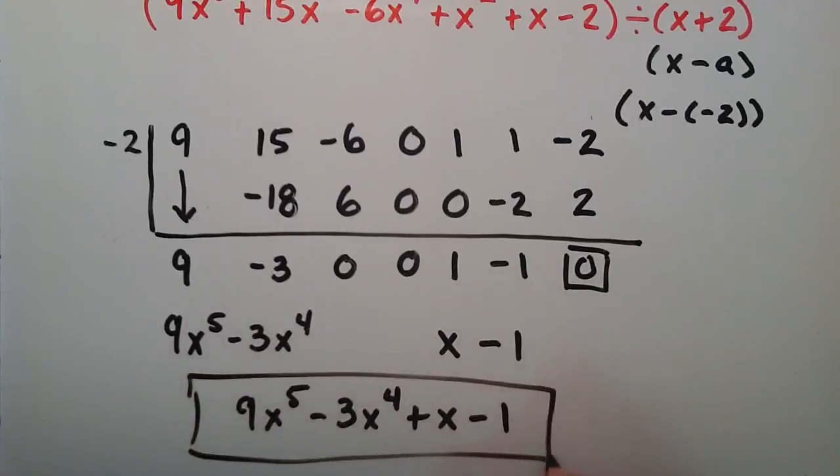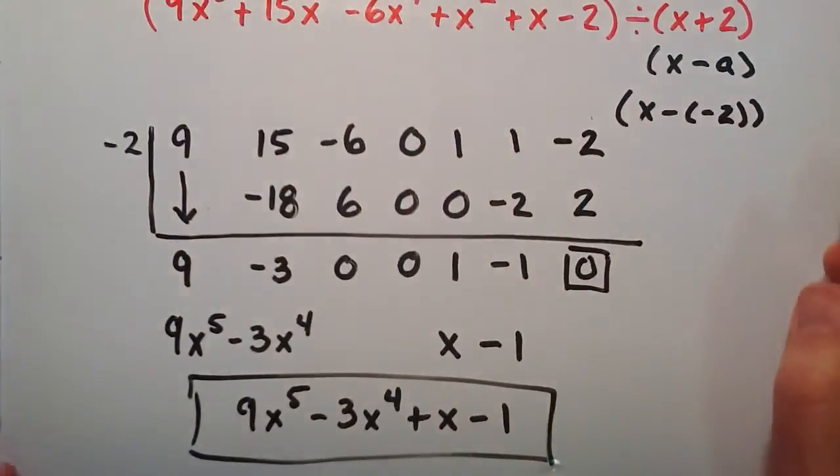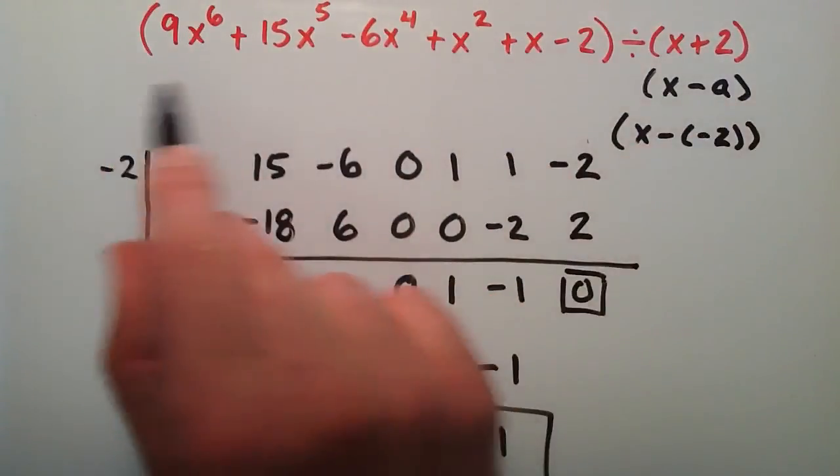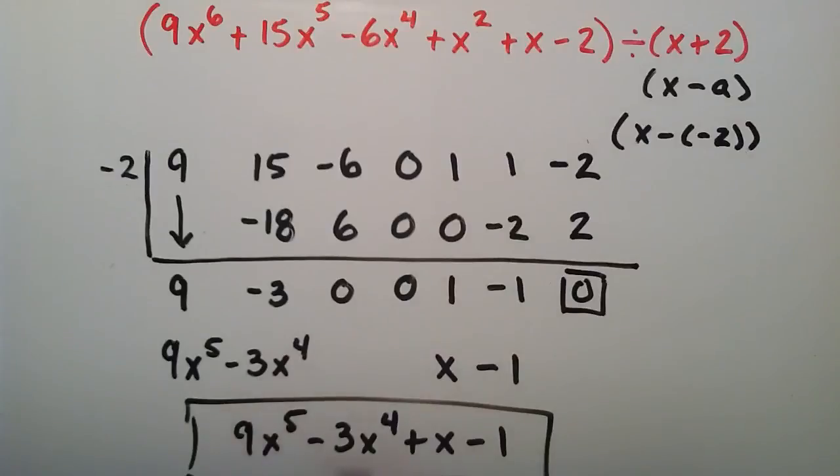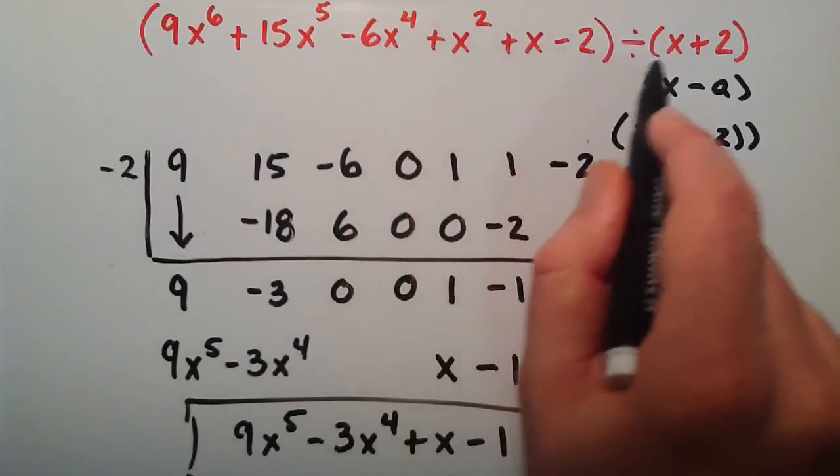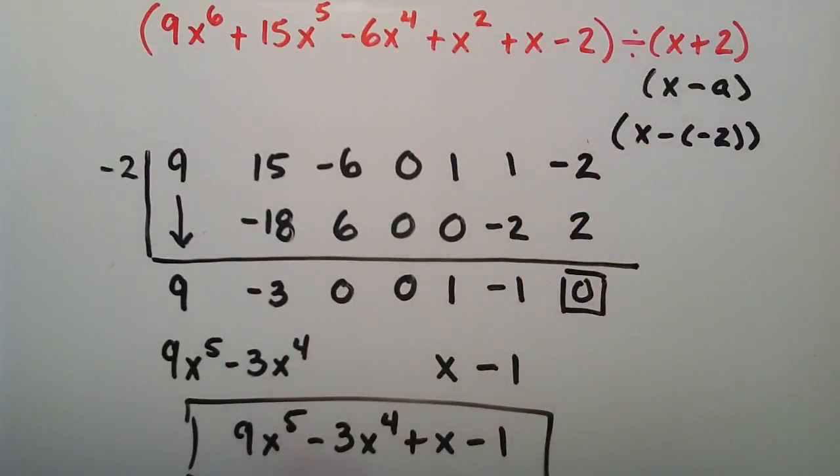So that is the answer to this division problem that is given up above here. There we go. So this right here is equal to this. So anyway, that is another example of how to use synthetic division. Take this big polynomial here, divide it by x plus 2, and you get this polynomial here.